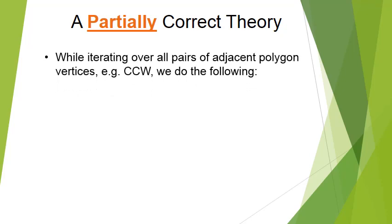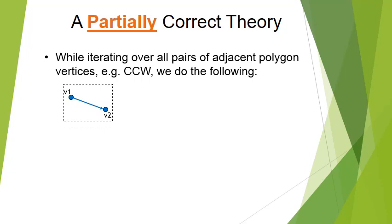While iterating, the polygon consists of vertices and edges. We iterate over a pair of adjacent vertices counterclockwise. If I have two adjacent vertices counterclockwise which are both inside the clipping area, I save only the second one. So if the edge goes from V1 to V2, I save only V2.